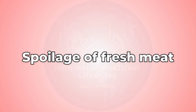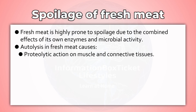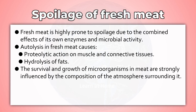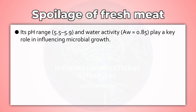Spoilage of Fresh Meat. Fresh meat is highly prone to spoilage due to the combined effects of its own enzymes and microbial activity. Autolysis in fresh meat causes proteolytic action on muscle and connective tissues and hydrolysis of fats. The survival and growth of microorganisms in meat are strongly influenced by the composition of the atmosphere surrounding it. Fresh meat contains a wide variety of nutrients, including sugars, amino acids, vitamins, and cofactors.